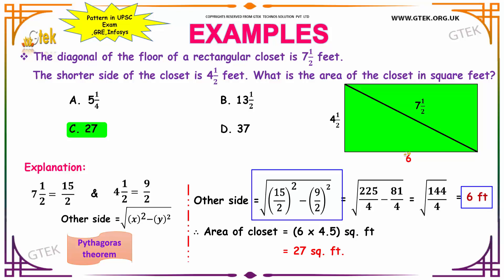So, the unknown side is 6 feet. To find the area of the rectangular closet, we have our length and our breadth. So, use the formula, area is equal to length into breadth. That is, 6 into 4 and a half, which can be written as 4.5. That gives you 27 square feet.